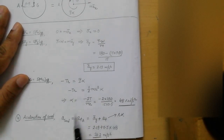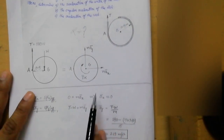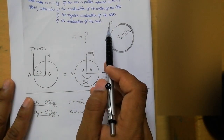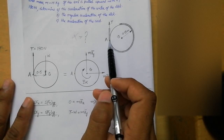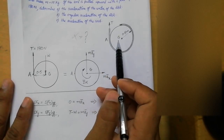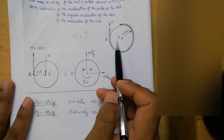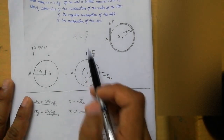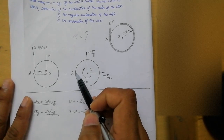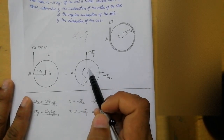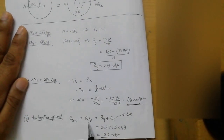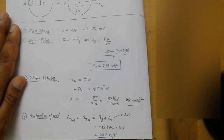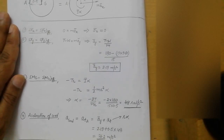The new concept in this numerical was the acceleration of the cord. To summarize: to find the acceleration of the cord, we find the tangential acceleration at point A of the disk. For point A, there are two acceleration components — one is the acceleration of the disk along the y direction, and another is the tangential acceleration at A due to rotation. That is why this formula is used to find the last part of the problem. I hope this numerical is clear to you. Thank you very much.